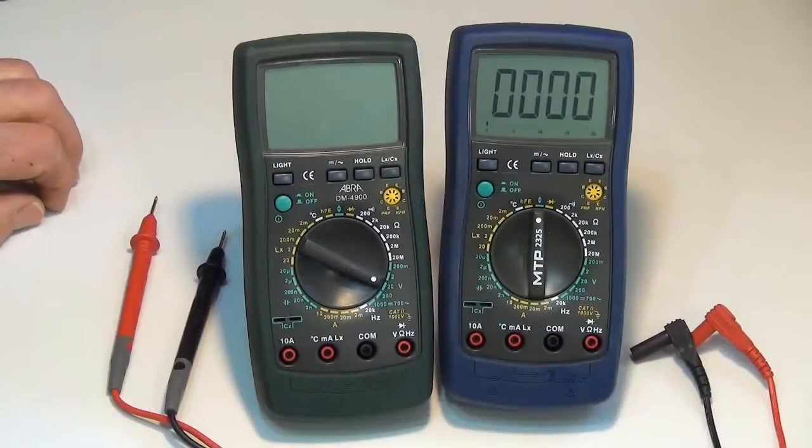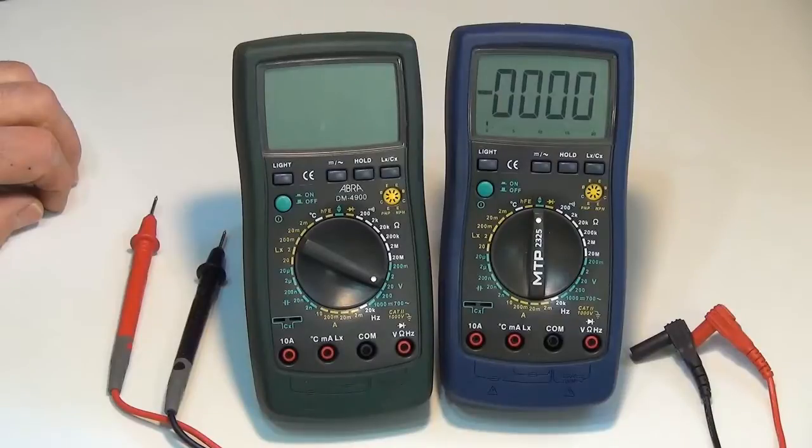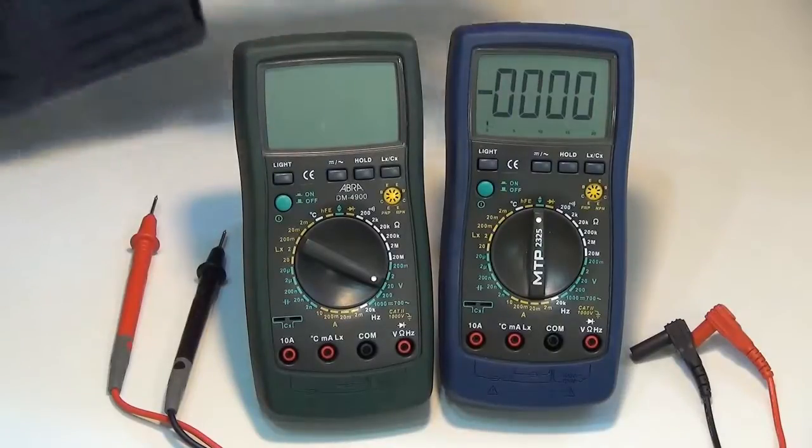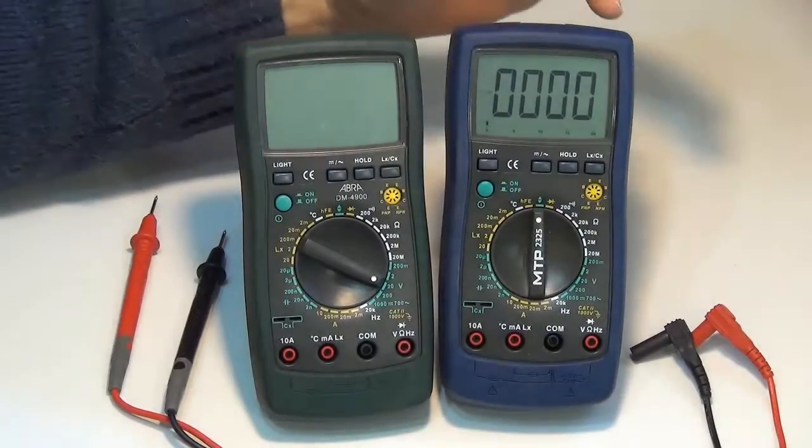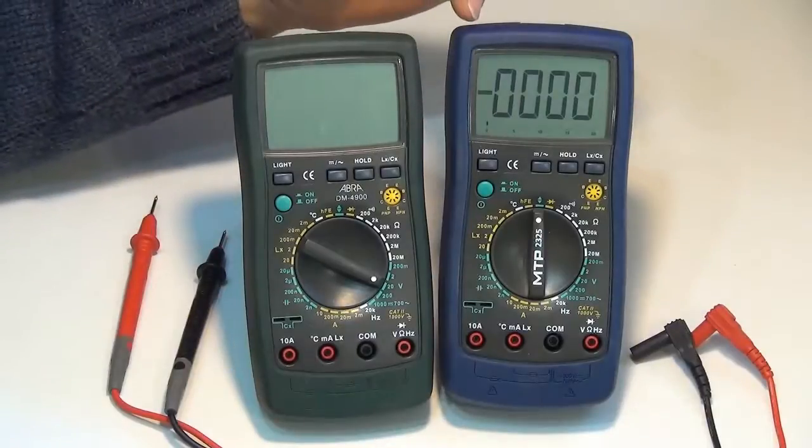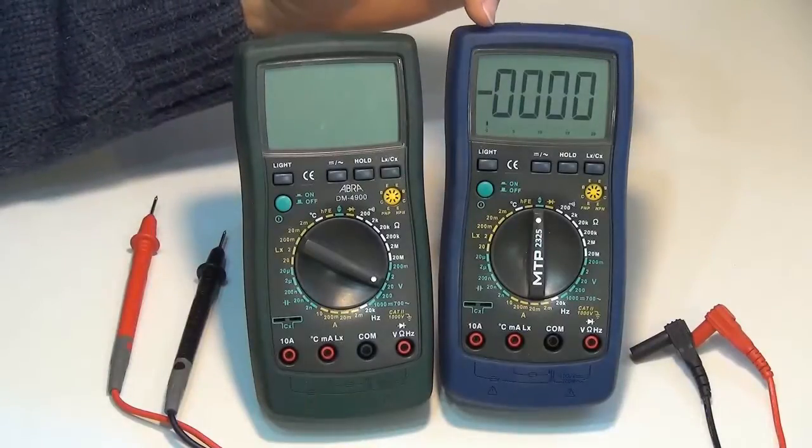Take a very close look at the display on the LCD or liquid crystal display. Here you can see I've got four digits. I've got a negative sign flashing back on and off.